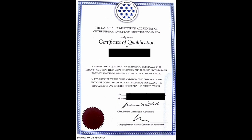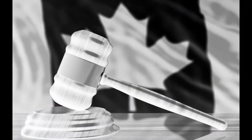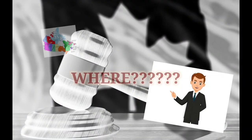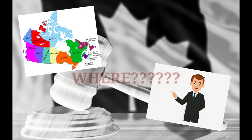Once you are done with the NCA exams, the FLSC gives you a certificate of qualification, which looks like this. Now let's discuss Step 2. Step 2 is getting yourself enrolled with the law society of the particular province where you want to build your career or become a lawyer. For example, if you want to become a lawyer in BC — British Columbia — you have to register with the Law Society of British Columbia.